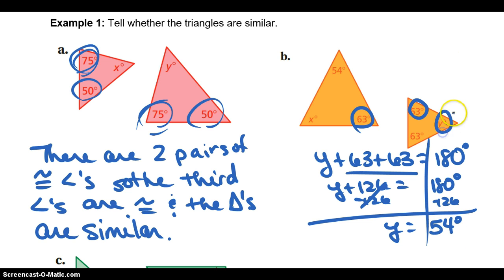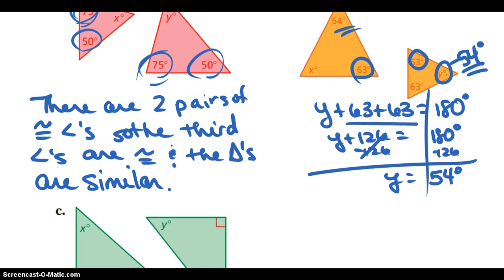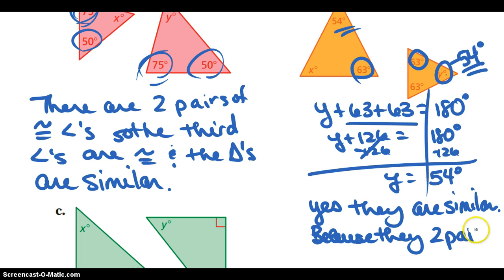If I go back up here to Y and put in 54, does this 54 match up? Do we have two pairs now? Yes. Therefore, these triangles are similar. My explanation would be: yes, they are similar because they have two pairs of congruent angles.